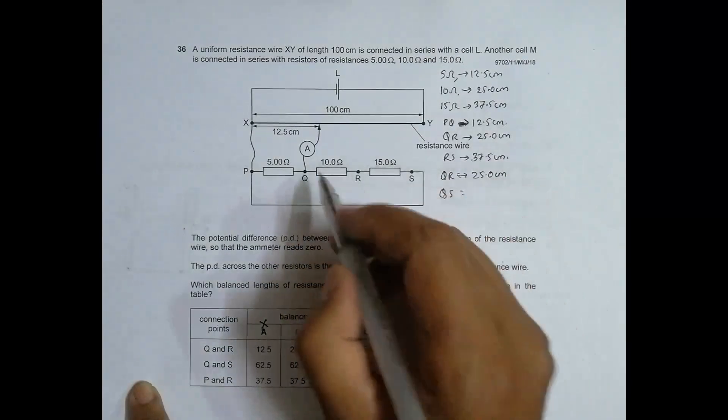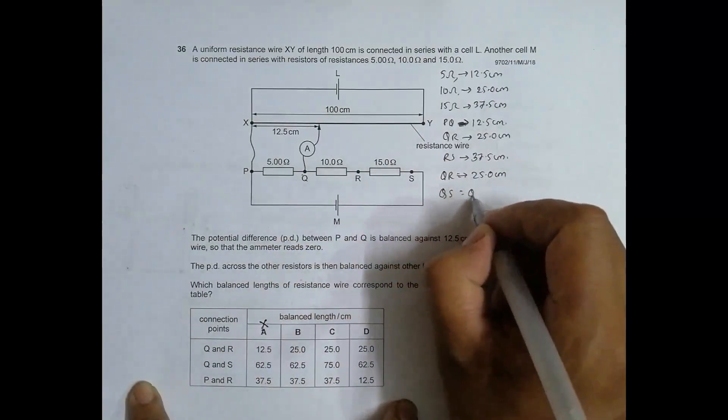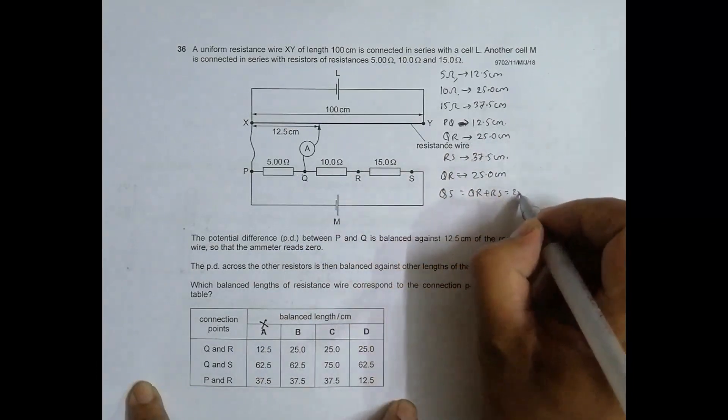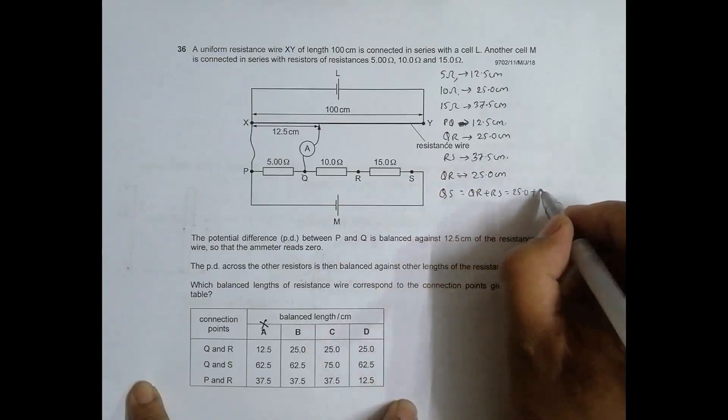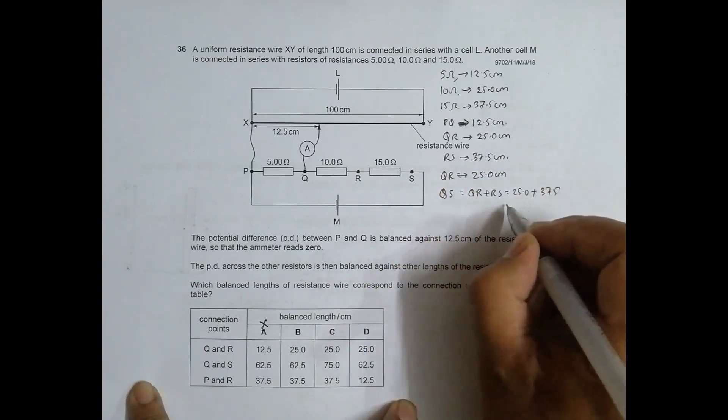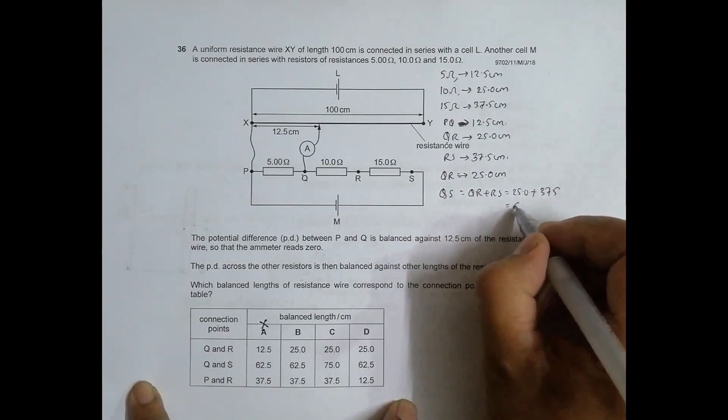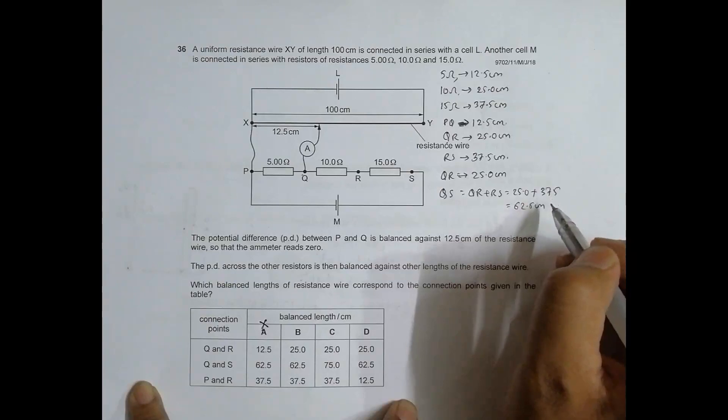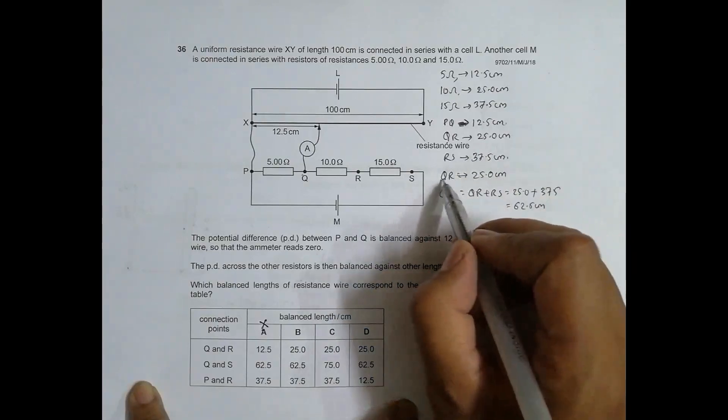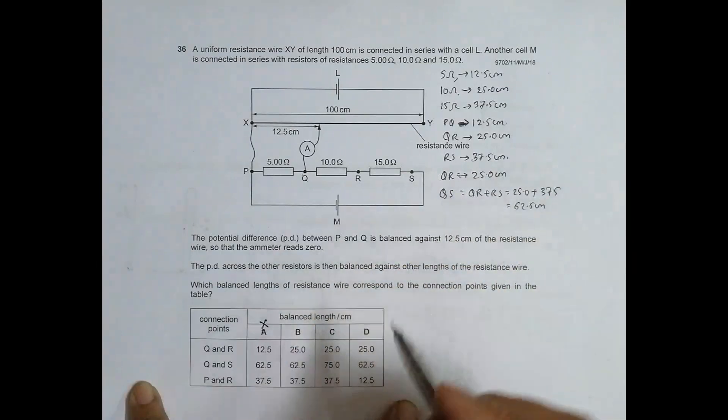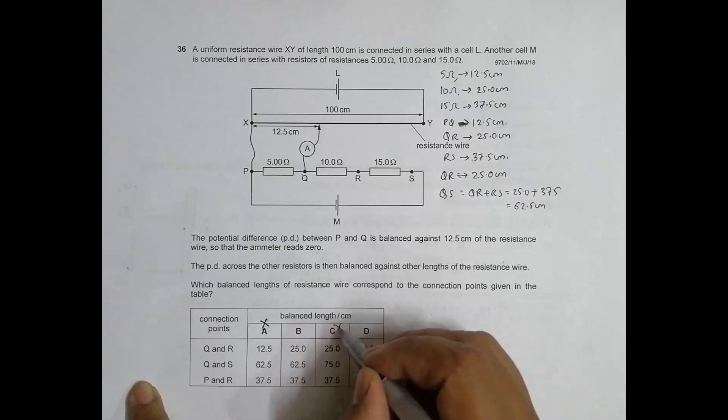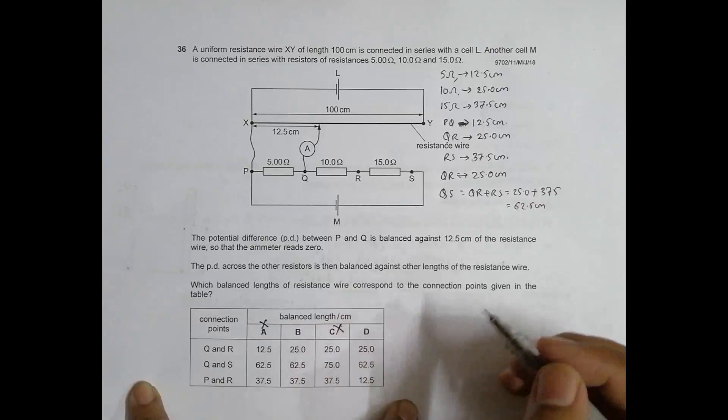Then I need QS. So QS is equal to QR plus RS. QR corresponds to 25.0 plus RS corresponds to 37.5, so this becomes equal to 62.5 centimeters. So QS corresponds to 62.5 centimeters. QR is 25 and QS is 62.5, so C disqualifies and B and D are still in the race.